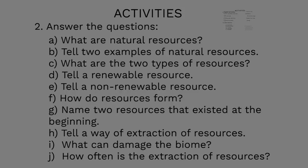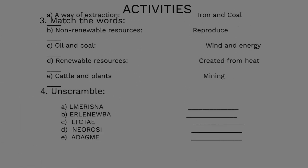For example, question A: What are natural resources? Give me two examples of natural resources. And question C: What are the two types? You're going to answer all those questions in your UOI copybook. Then you have a matching words activity and a second part where you will be unscrambling letters.